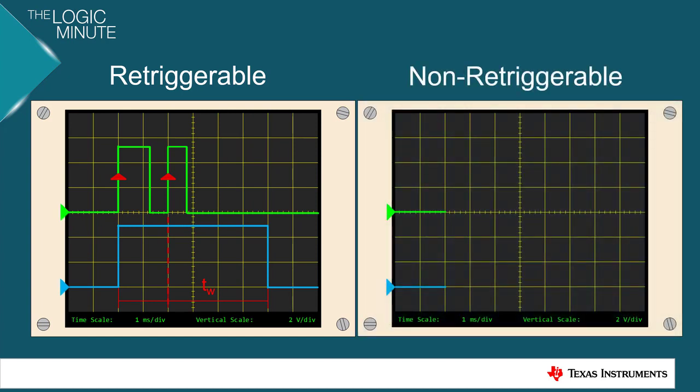Conversely, on the right, we have the non-retriggerable version, where when it sees that first trigger, the output goes high for what we would expect is TW, and despite the second trigger, we just get one pulse width of TW.